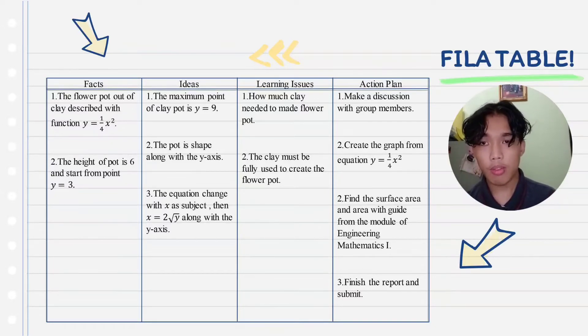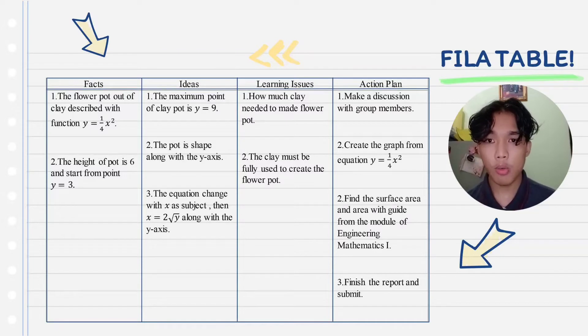The fillable consists of four parts which is facts, ideas, learning issues, and action plan. The facts with the case study that we currently have is the flower pot. The flower pot that is made of clay is described with function y equal to 1/4 x power of 2, and the height of the pot is 6 and starts with the point y equals 3, which gives us the idea that the maximum point of the pot is y equals to 9.